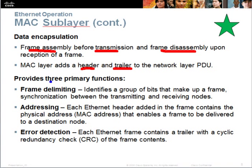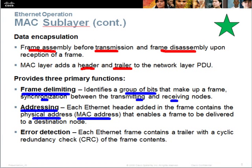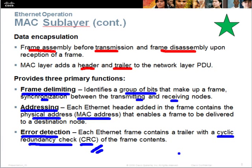There are three primary functions of the MAC sub-layer. First, frame delimiting, where a group of bits ensures frames are synchronized between the transmitting and receiving destination. Second, the addressing function — the MAC layer handles the MAC address, or physical address, ensuring the data packet is sent to the correct destination. Third, error detection: Ethernet frames contain a cyclic redundancy check (CRC) field. If the data fails the CRC check at the destination, it will be discarded and retransmitted.